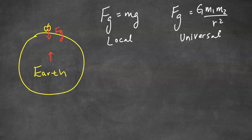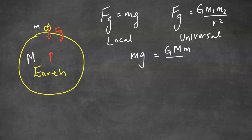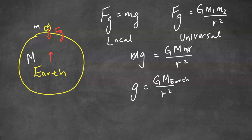You might wonder why little g is 9.8 on Earth. If we set Mg equal to big G times M (Earth) times m (apple) divided by R squared, the little m's cancel out, and we get that little g equals big G times the Earth's mass divided by R squared. Plugging in the Earth's mass and the radius of the Earth, we get 9.8 Newtons per kilogram. So the value 9.8 is determined by the Earth's mass and its radius.